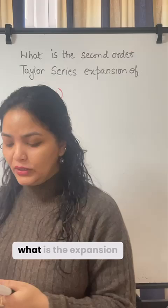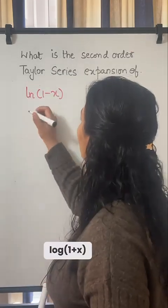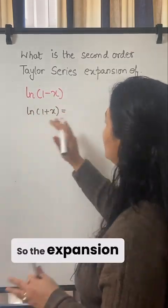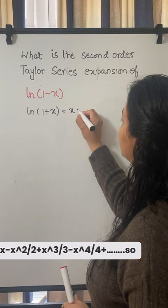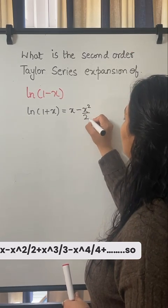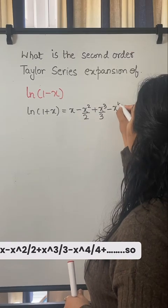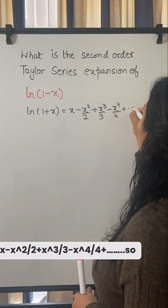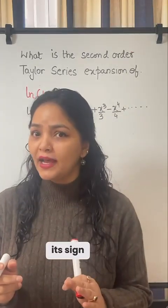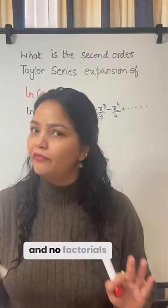For this, you need to know what is the expansion for log(1+x). So the expansion for log(1+x) is x minus x squared upon 2 plus x cubed upon 3 minus x to the power 4 upon 4, so on and so forth. It alternates in sign, starts with x and no factorials are involved.